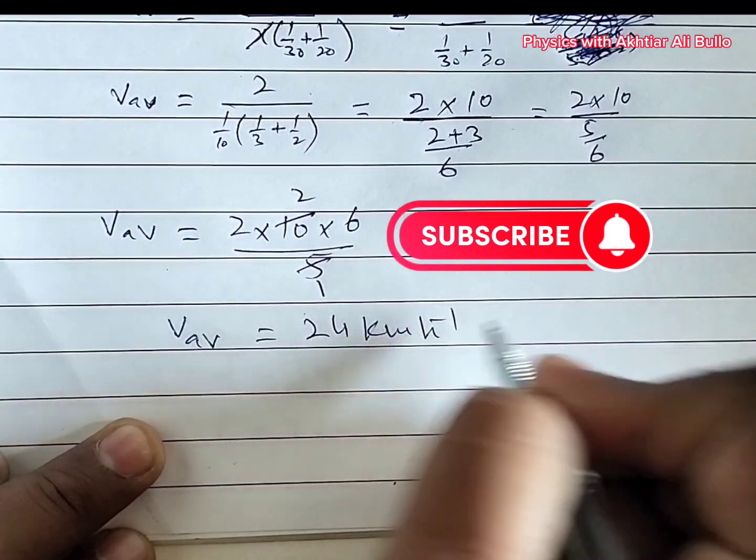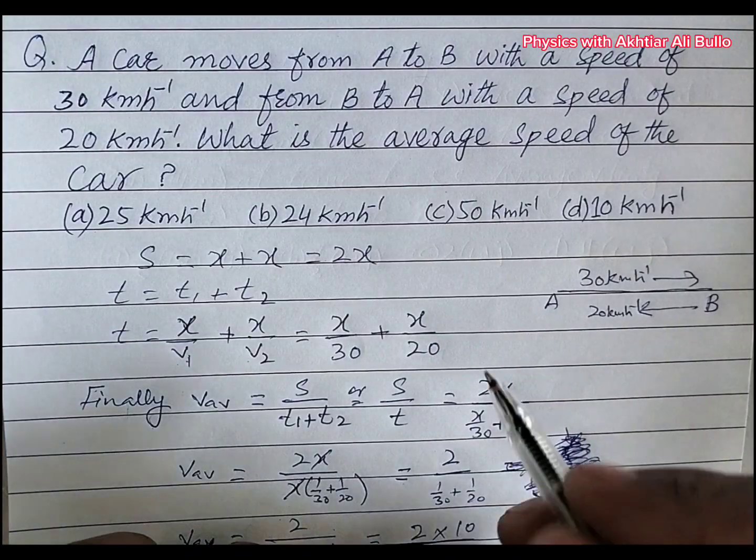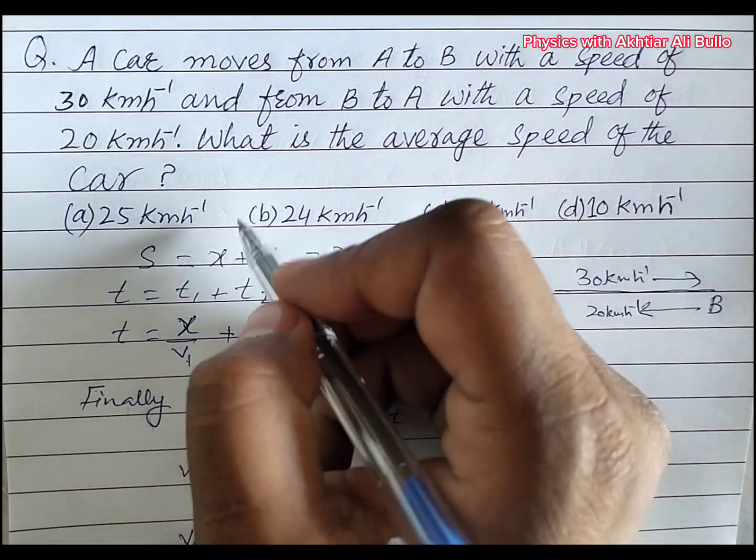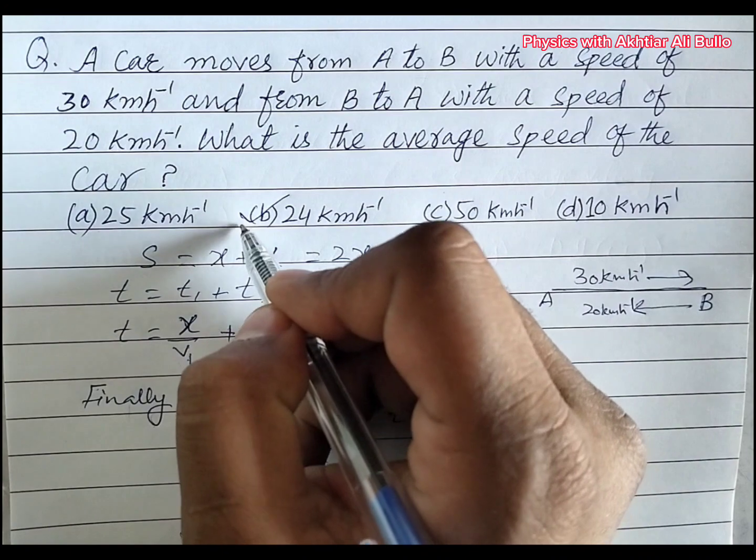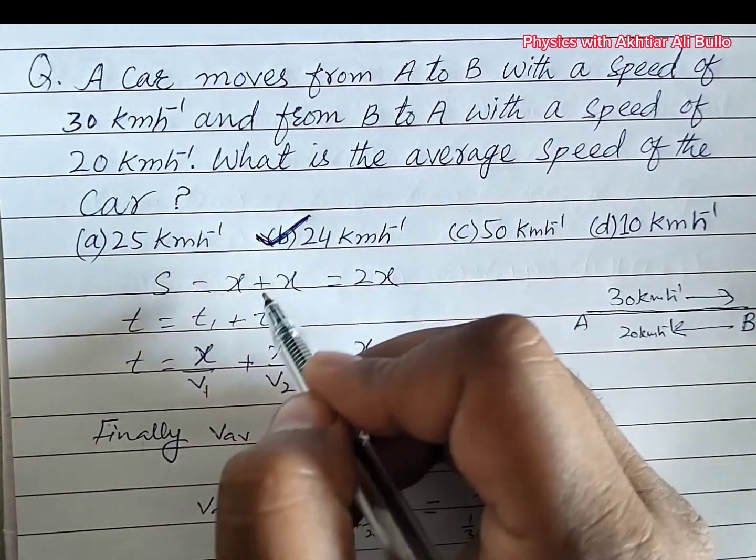kilometers per hour. So the correct option will be B, 24 kilometers per hour.